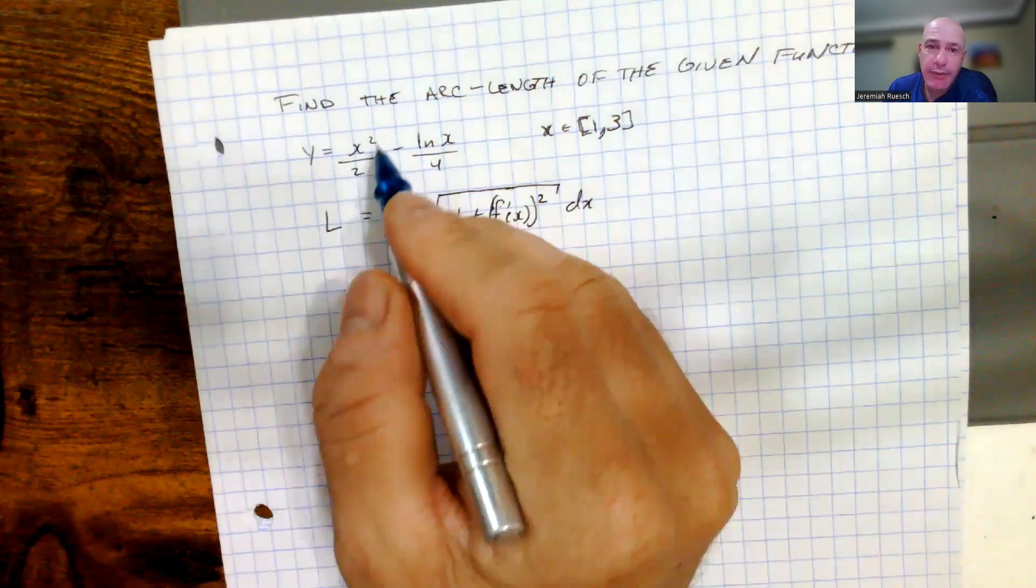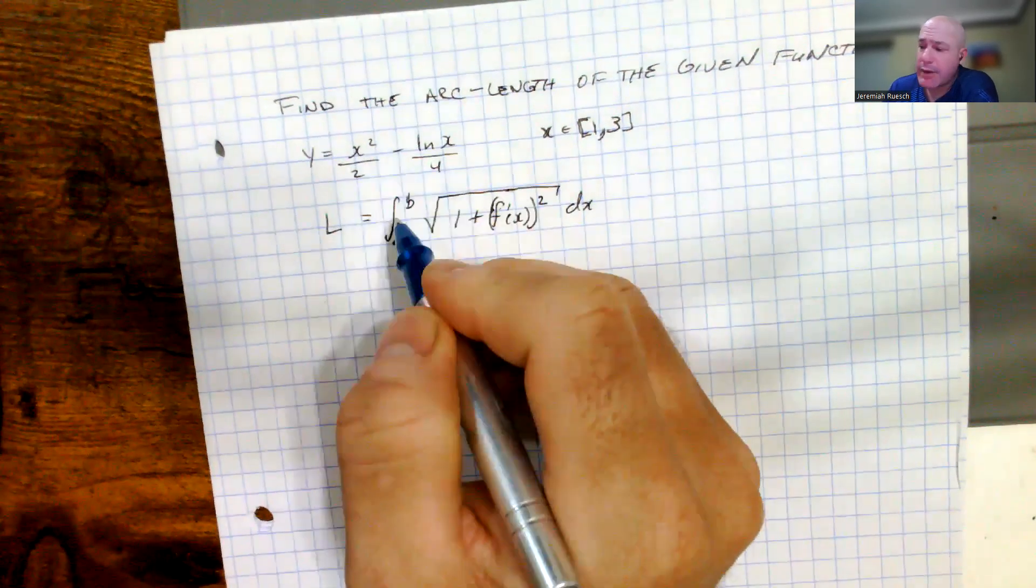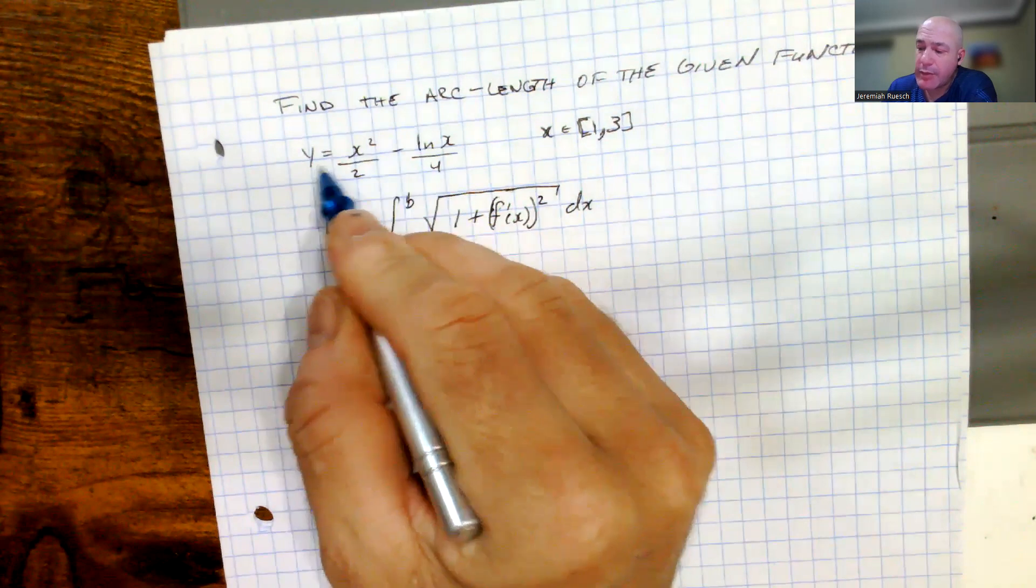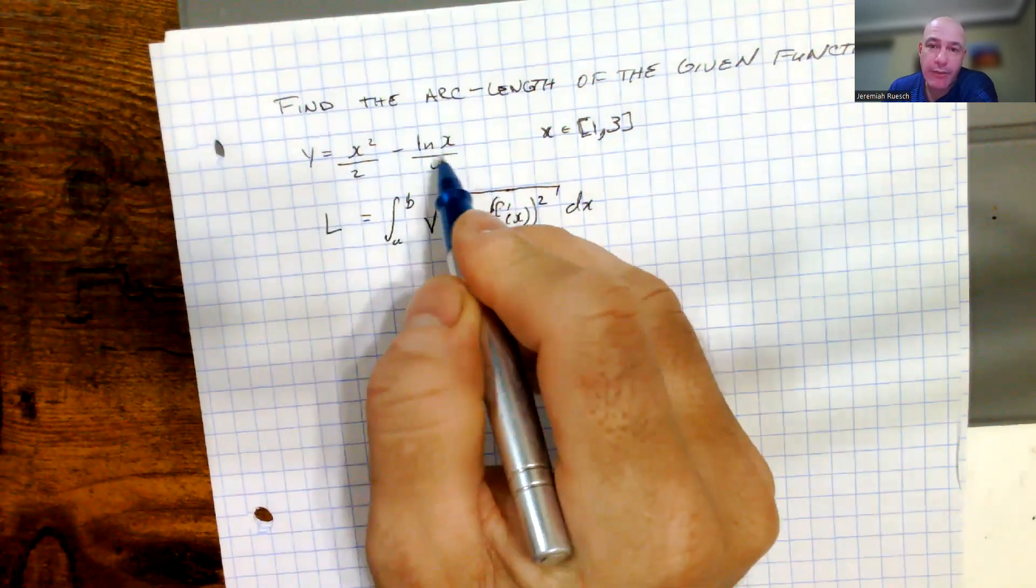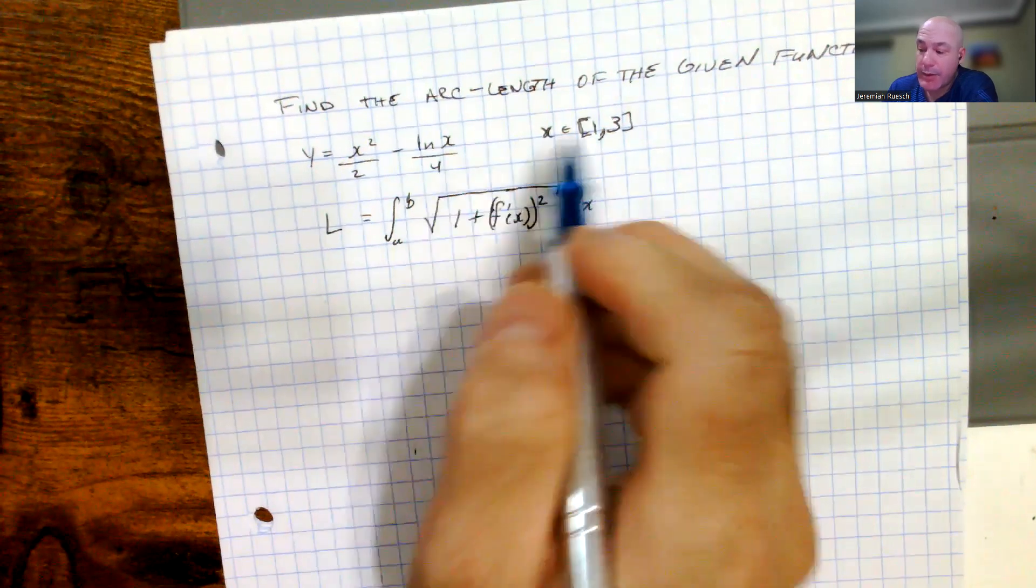We're going to find the value of the arc length of the given function, in particular when we have y equals x squared over 2 minus the natural log of x over 4 on the interval from 1 to 3.